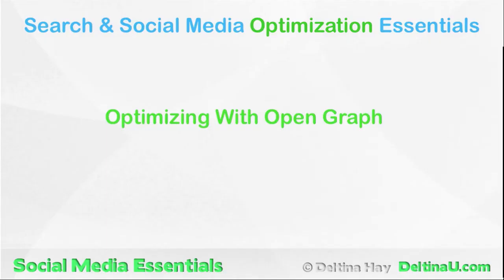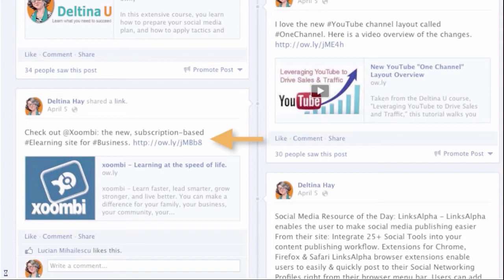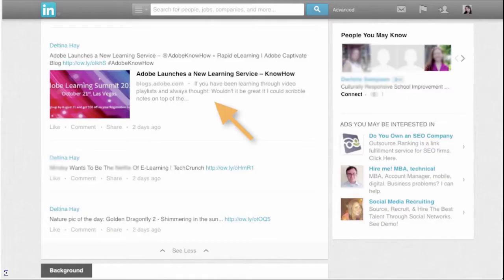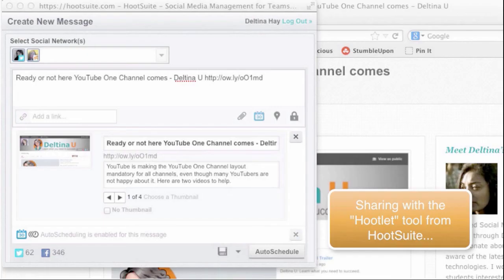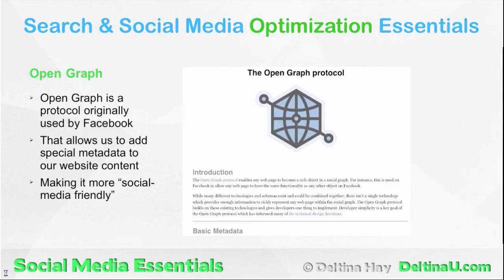To wrap up optimization for sharing, we discuss Open Graph — how we can help our content look its best when shared, especially on social networking sites like Facebook and LinkedIn. We look at examples of content that has been optimized for sharing and content that has not, and discuss how the Open Graph protocol can help us optimize our own content for sharing.